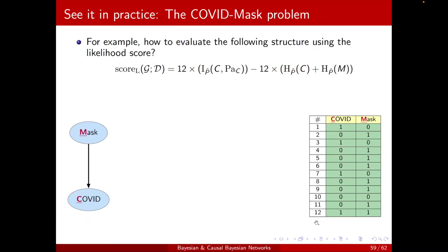Okay, great. So we're done with the proof. Let's see it in practice quickly. Basically, how to calculate the likelihood score of this structure, mask to COVID.